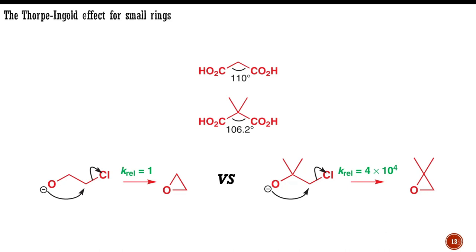Now consider what happens when both of these alcohols form an epoxide. The bond angle has to become about 60 degrees, which involves about 50 degrees of strain for the first epoxide, but only 46 degrees of strain for the second. By distorting the starting material, the methyl groups have made it slightly easier to form a ring.